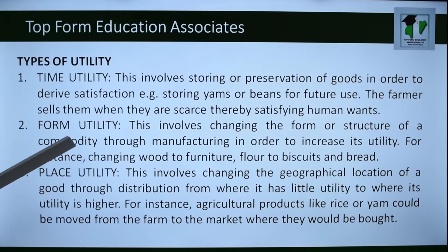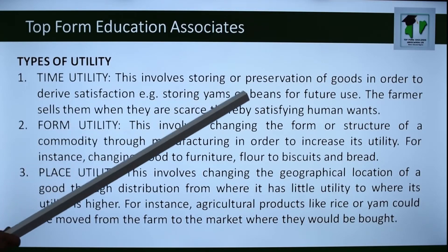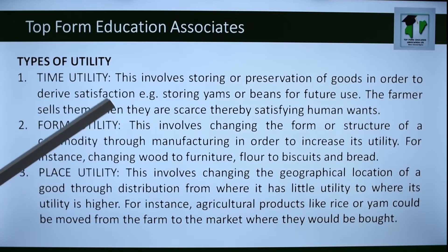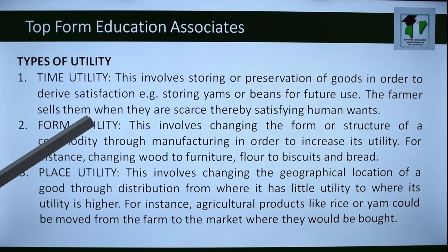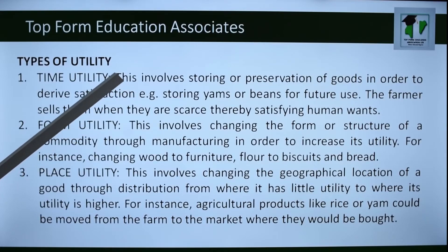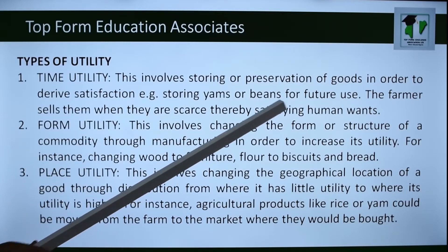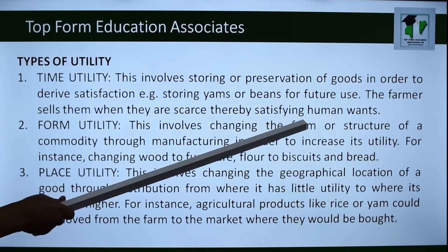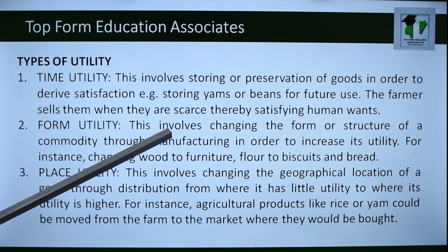Time utility involves storing or preserving goods in order to give satisfaction later. During harvesting, some goods are surplus and cheap. Someone can buy them, keep them until they become scarce, then bring them out and sell at a profit. The farmer sells when goods are scarce, thereby satisfying human wants.